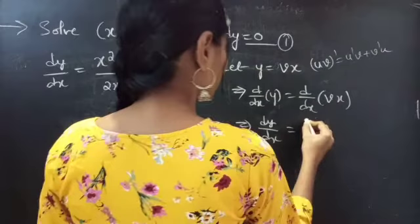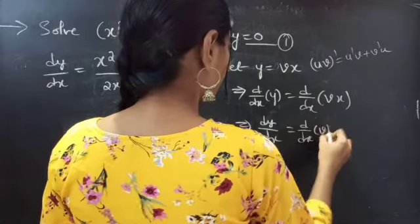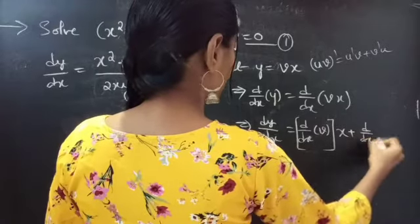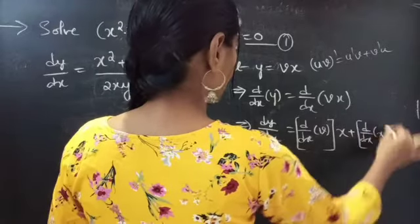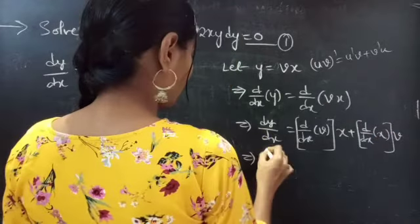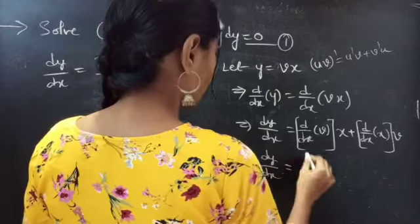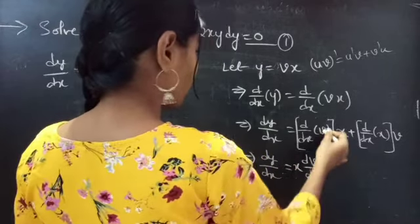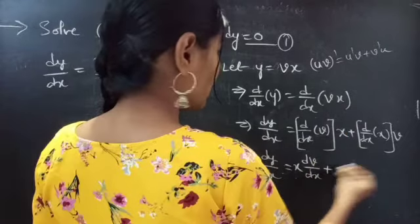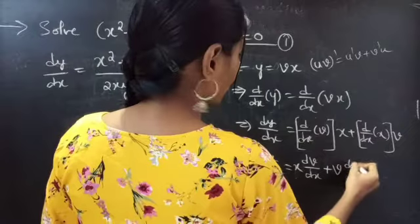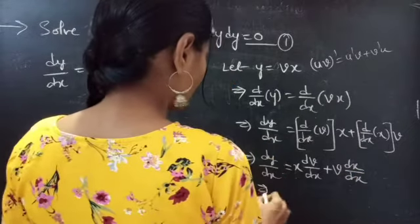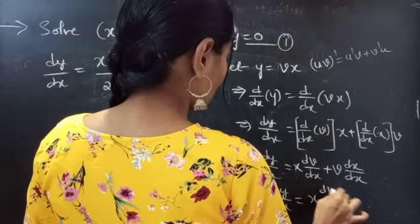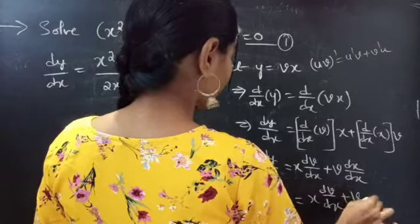We know that the derivative of uv is u dash v plus v dash u. So dy by dx equals to dv by dx into x plus v into derivative of x with respect to x. This gives dy by dx equals to x into dv by dx plus v.